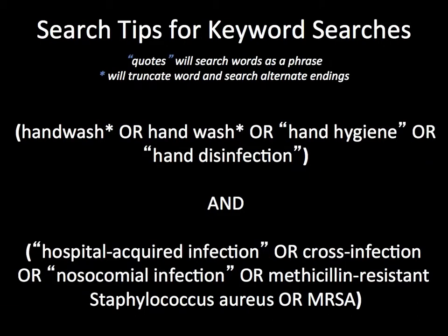Some search tips for keyword searches: when we use quotes, we can search the word as a phrase. When we use truncation, it searches the word and alternate endings of the word. For example: hand wash* (truncated), or hand wash* (truncated), or "hand hygiene", or "hand disinfection". Then we'll AND that with "hospital-acquired infection", or cross-infection, or "nosocomial infection", or methicillin-resistant staphylococcus aureus, or MRSA.